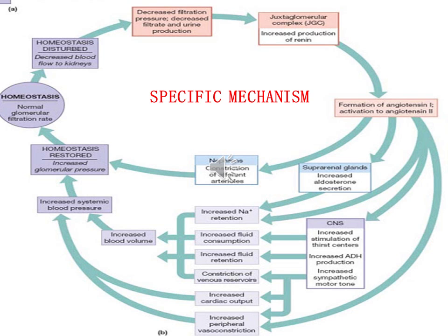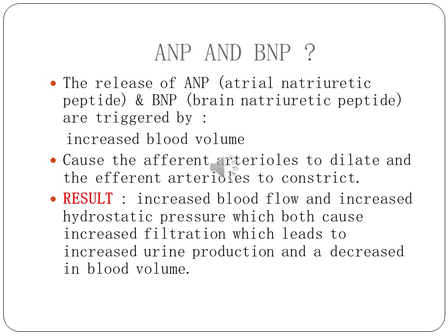Angiotensin 2 also causes increased absorption of sodium and water at the proximal convoluted tubule. ANP stands for atrial natriuretic peptide, released by the atria, and BNP stands for brain natriuretic peptide, released from the ventricle. The release of ANP and BNP is triggered by increased blood volume. They cause the afferent arteriole to dilate and the efferent arteriole to constrict, resulting in increased blood flow and increased hydrostatic pressure, which leads to increased filtration, increased urine production, and a decrease in blood volume.